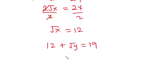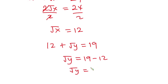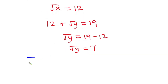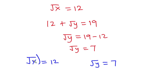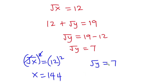Making square root of y the subject: square root of y equals 19 minus 12, which is 7. So we have square root of x equals 12 and square root of y equals 7. Since the question asks for x and y, I'll square each side. Squaring gives x equals 144, and y equals 7 squared, which is 49.